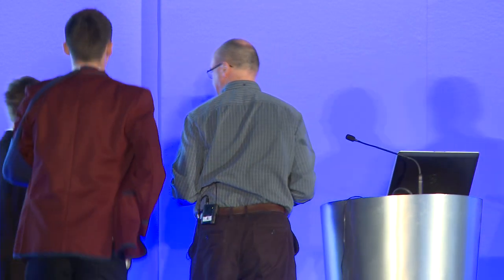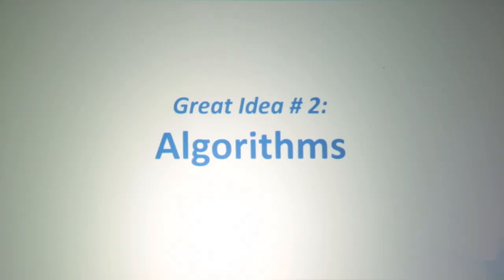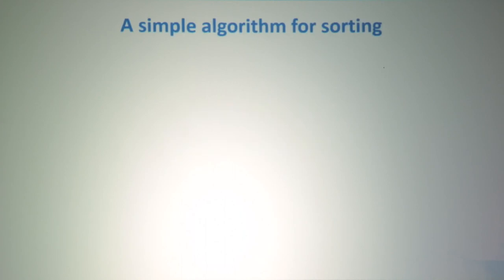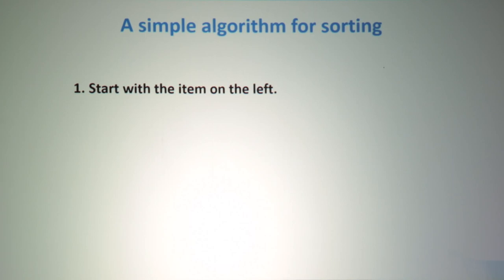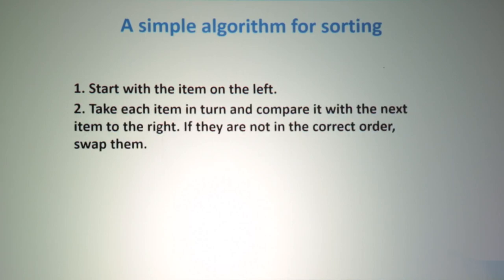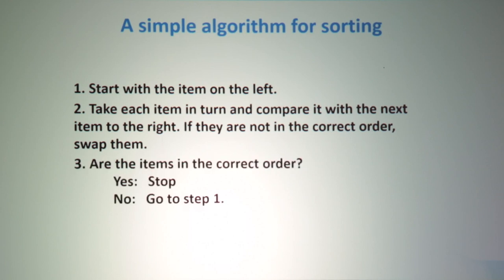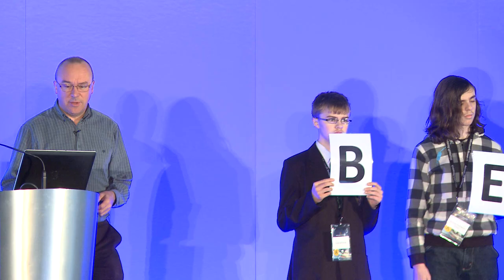We're going to look at a very simple algorithm, which is an algorithm for sorting. We're going to sort these letters into their correct order. An algorithm is just a sequence of instructions. The first instruction says: start with the item on the left. The second instruction says: take each item in turn, compare it with the next item to the right, and if they're not in the correct order, swap them. Step three is to ask: are the items now in the correct order? If they are, we're done. If they're not, we go back to step one and repeat.